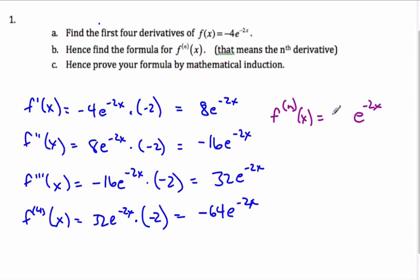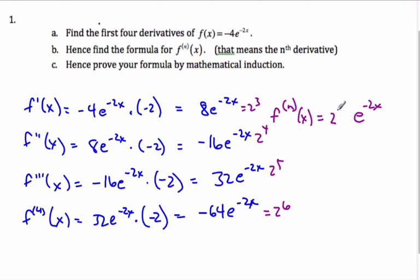So it's going to involve powers of 2. I know 8 is 2 to the 3, then 2 to the 4, 2 to the 5, and 2 to the 6. So the fourth derivative has exponent 6, the first derivative has exponent 3 — meaning the exponent is n plus 2.